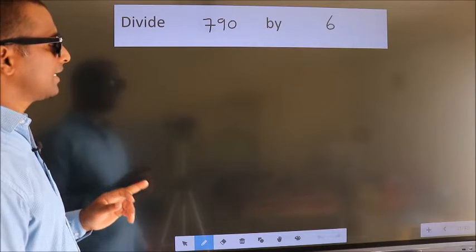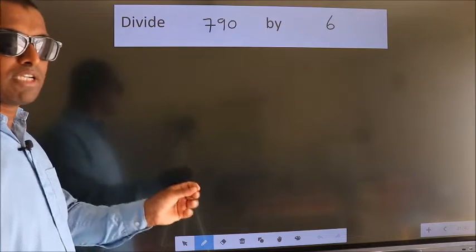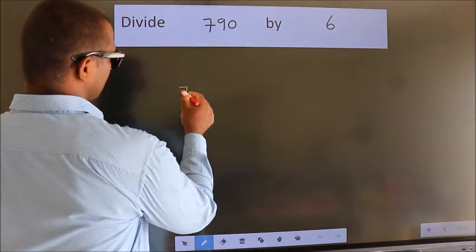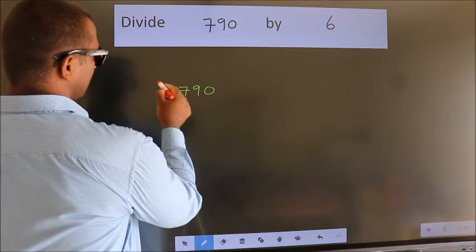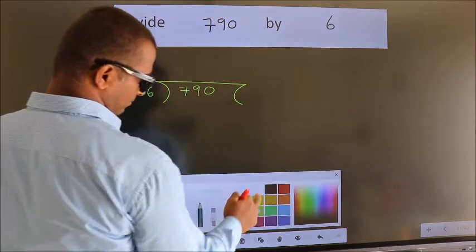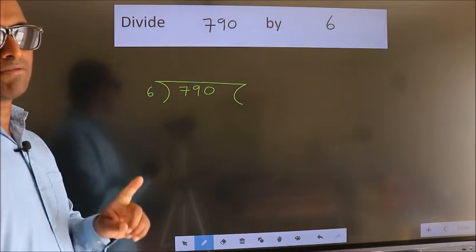Divide 790 by 6. To do this division, we should frame it in this way. 790 here, 6 here. This is your step 1.